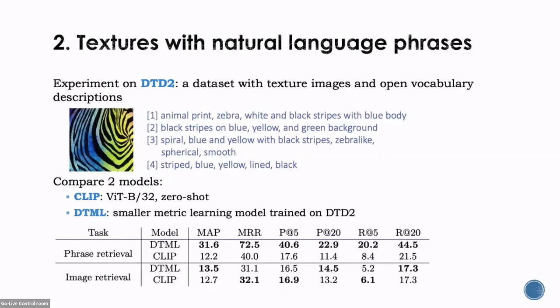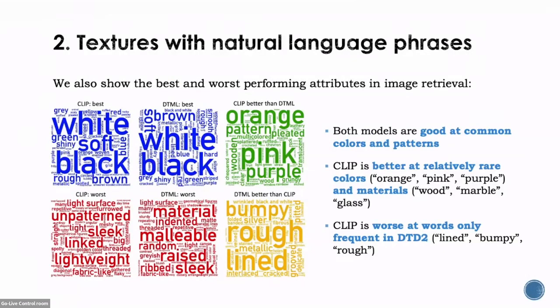For the second part, we study textures with natural language phrases using the DTD2 dataset, which has texture images and open vocabulary descriptions. We compare CLIP with DTML, a strong metric learning baseline trained on DTD2. We have two tasks: phrase retrieval — given the image, rank all texture phrases — and image retrieval — given the phrase, rank all texture images. We can see that CLIP performs similarly to the baseline on image retrieval, but is slightly worse on phrase retrieval.